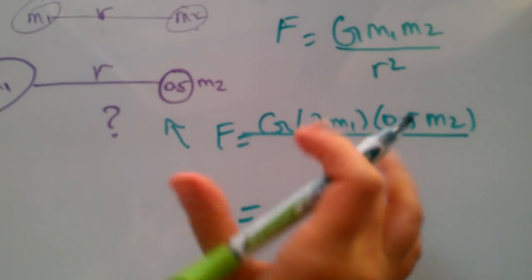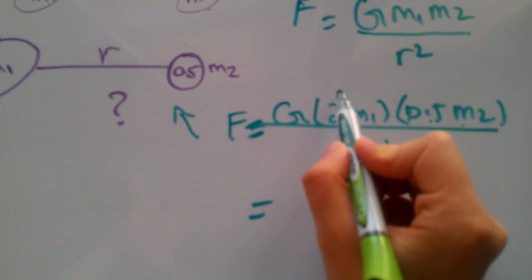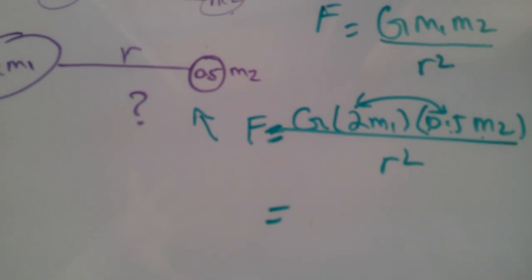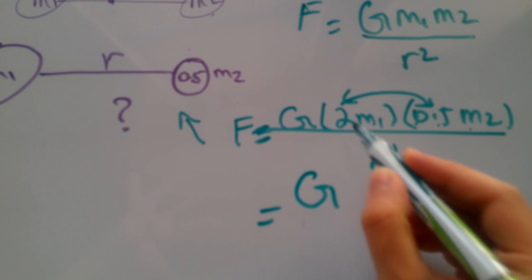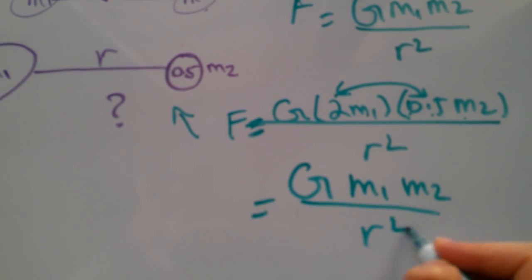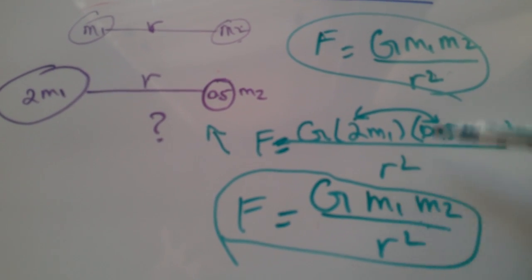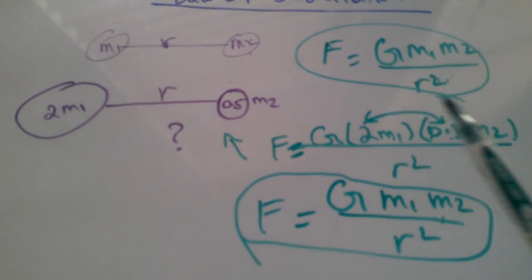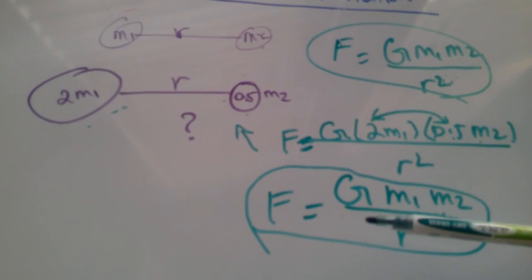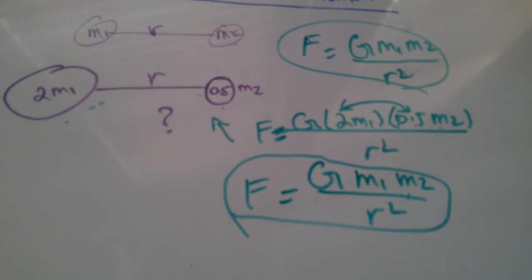The first case gives you F of G m1 m2 over r squared. This guy gives you G times 2m1 times 0.5m2 over the same r squared. Let's simplify this. G times 2 times 0.5 gives you 1, m1 m2 over r squared. So this is my new F, that was my old F. These are essentially the same. So if I double one of my masses and I half the other one but keep the distance the same, then gravitational force for this case stays the same.